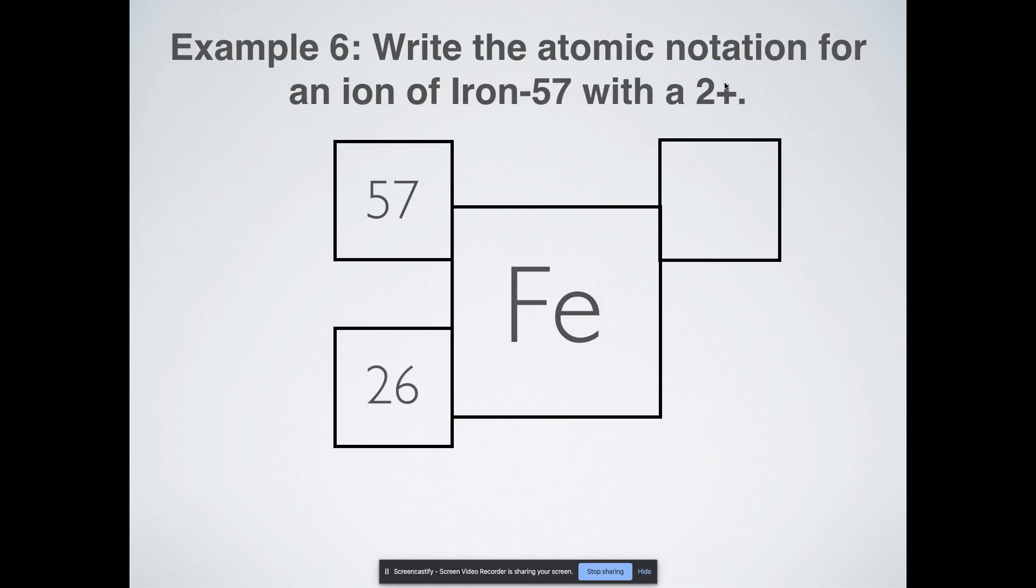And then I need to get a 2 plus. So remember, charge, so that's the 2 plus, equals protons minus electrons. I just need to put the 2 plus here because it says it's a 2 plus charge. I was really overthinking that. But if you wanted to know how many electrons it had, it would have 24 electrons. Because we have 26 positive charges. So if we have 24 negative charges, that means that I have a plus 2 charge.